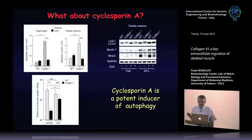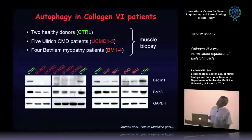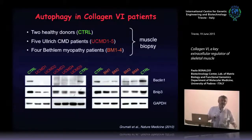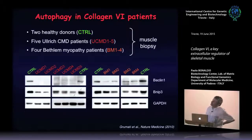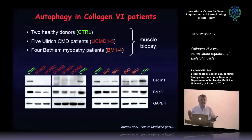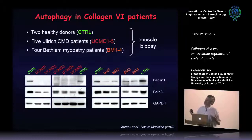Moving to patients: we collected biopsies from different centers from Ullrich and Bethlem patients — affected by the severe and milder forms — and wanted to check whether there is decreased autophagy in patients. It was pretty impressive. By western blot for Beclin-1, in the Ullrich patients there is almost complete absence of Beclin-1, and in Bethlem myopathy there is a decrease, though not as strong as in Ullrich. This suggests that autophagy defect in patients is related to the clinical severity — very strong autophagy defect in Ullrich, present in a less severe way in Bethlem.